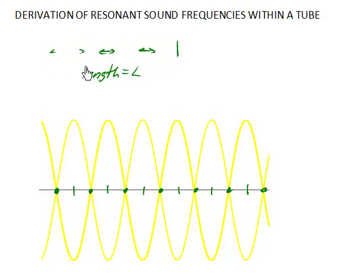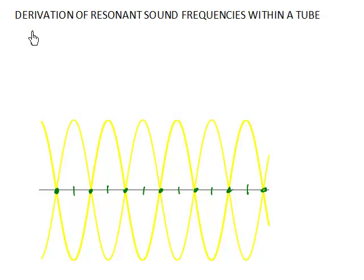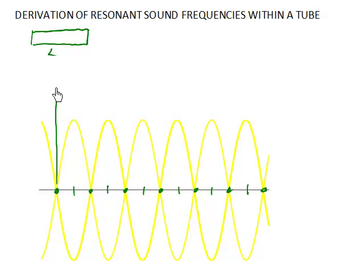Let's go ahead and do our derivation. What we're looking for is a relationship between L, the length of the tube, and the frequencies. Let's start with the case where the tube is closed at both ends. If it's closed at both ends, then both ends have to be nodes. The length of the pipe could be from one node to the next node, which is one-half of the wavelength.